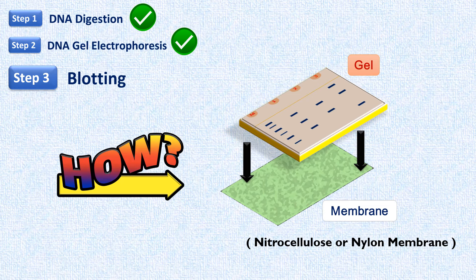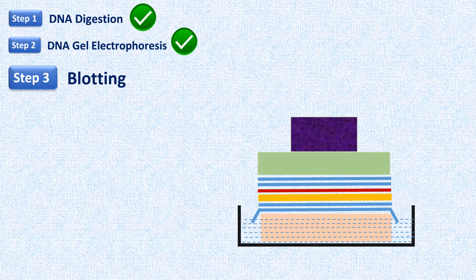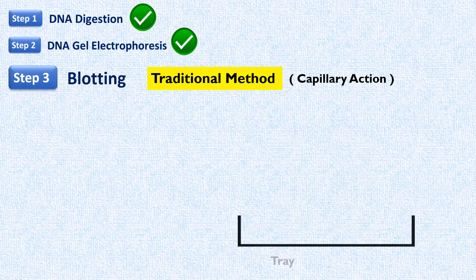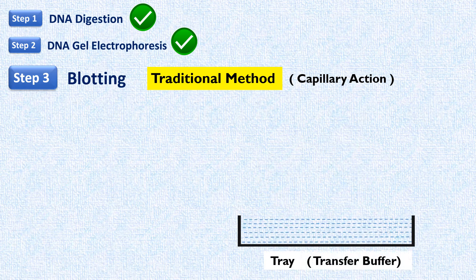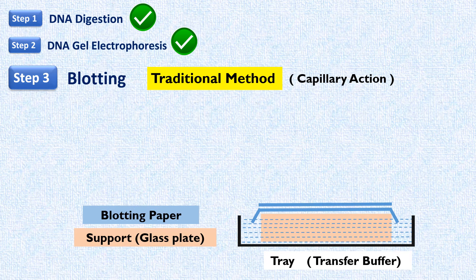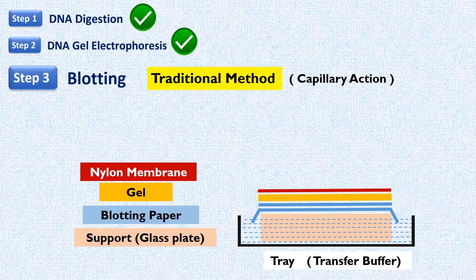How is this transfer carried out? You may have come across this diagram showing the transfer step of Southern blotting in your books. This is the traditional way to transfer DNA to the membrane, and the basis of this transfer is capillary action. In the transfer assembly: a tray is filled with a suitable transfer buffer, a support such as a glass plate is kept in the buffer, and absorbent blotting papers are placed on the support to act as a wick. The gel containing DNA is placed on top, and a nylon membrane of the same size as the gel is placed over it.